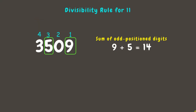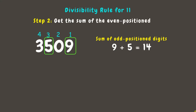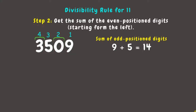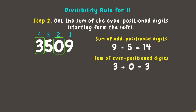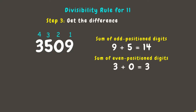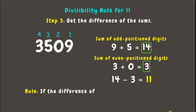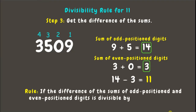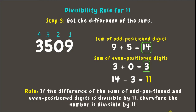Next step, let's get the sum of the even position digits. The even position digits are 3 and 0, and if we add them the answer is 3. Final step is to get the difference of the sums: 14 minus 3, which equals 11. According to the rule, if the difference is 11 or a multiple of 11, the number is divisible by 11. Therefore, 3509 is divisible by 11.